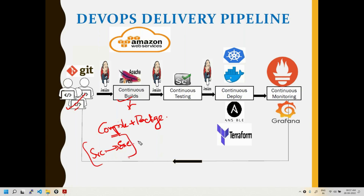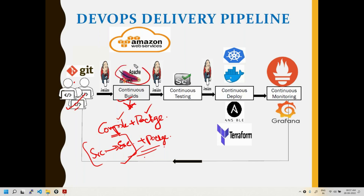Packaging means creating a deployable file — that's the build process. You compile and package the code through automation, not manually. That's where the build automation tool Maven comes in, along with Git.